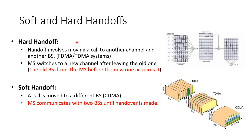We can divide handoff into two types: soft handover and hard handover. Hard handoff involves moving a call to another channel and/or another base station, and that happens with FDMA (Frequency Division Multiple Access) or TDMA (Time Division Multiple Access) systems. In these systems, the mobile station switches to a new channel after leaving the old one — the old station first drops the call, and then the mobile station moves to another one. So there is a drop first, and then acquiring in the second place.